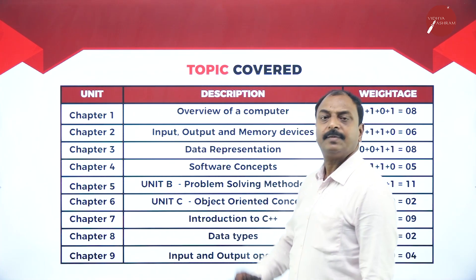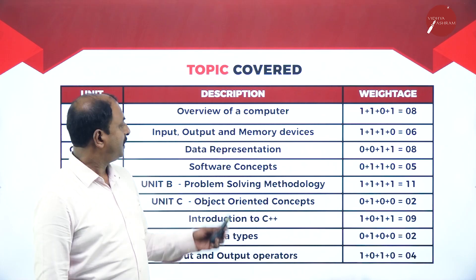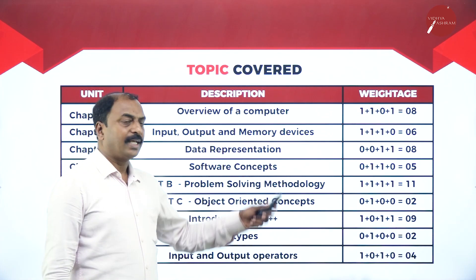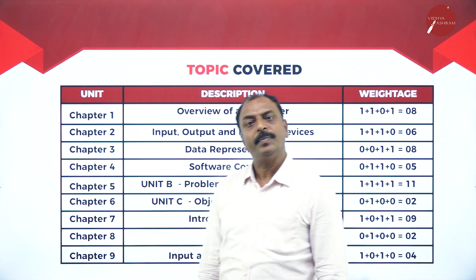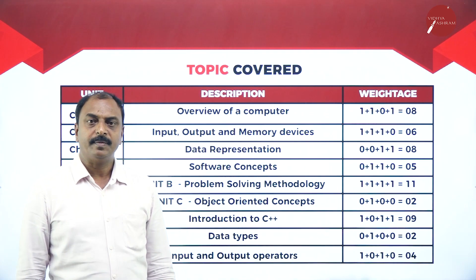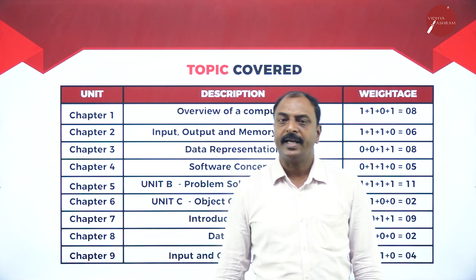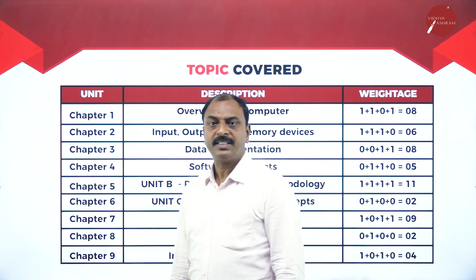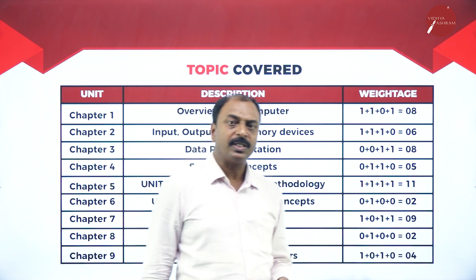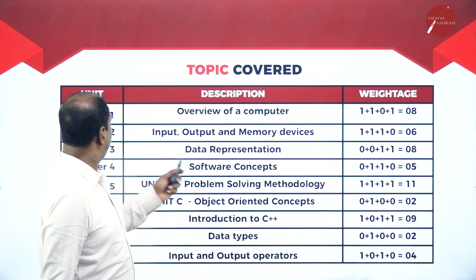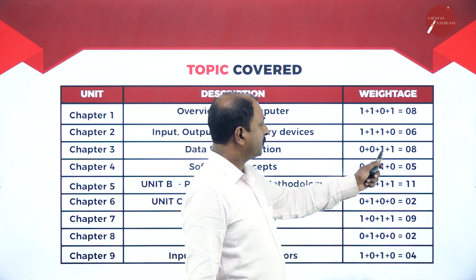Chapter three is 'Data Representation.' This involves a little bit of mathematics — how do we represent data in a computer system. We are going to learn different types of numbering systems. In a computer system, it works based on only binary numbers, that is zero and one. Similarly we have decimal, octal, and hexadecimal number systems, and we are going to practice conversion from one number system to another.